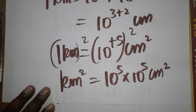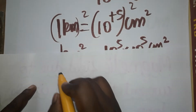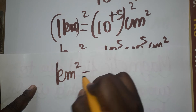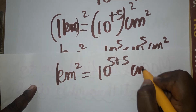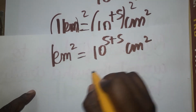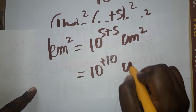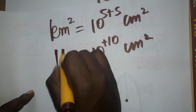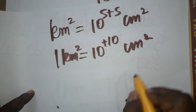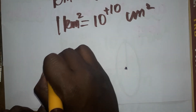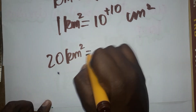So 1 kilometer square equals 10 power 5 plus 5 centimeter square. 5 plus 5 is 10, so 1 kilometer square is equal to 10 power 10 centimeter square.